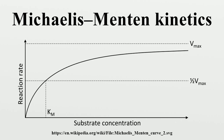Michaelis-Menten kinetics have also been applied to a variety of spheres outside of biochemical reactions, including alveolar clearance of dusts, the richness of species pools, clearance of blood alcohol, the photosynthesis-irradiance relationship, and bacterial phage infection.